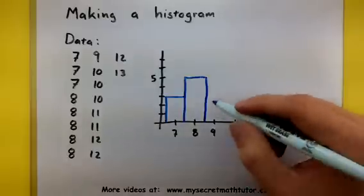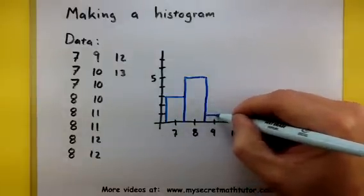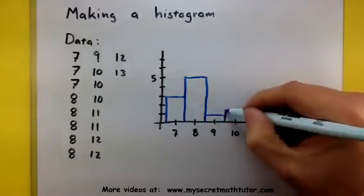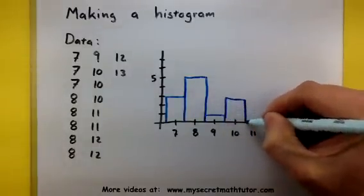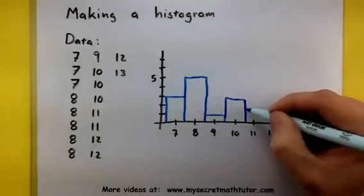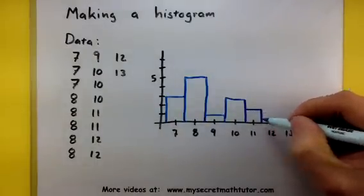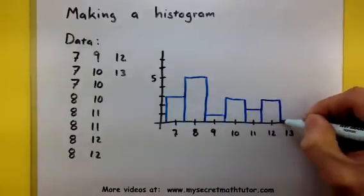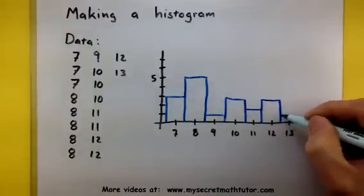And you can see how this process plays out for all the rest of the numbers. So when I get to the 9s, I only have one 9. I get to the 10s, I have three of those. I get to the 11s, I have two 11s. Looks like three 12s. And only one 13.